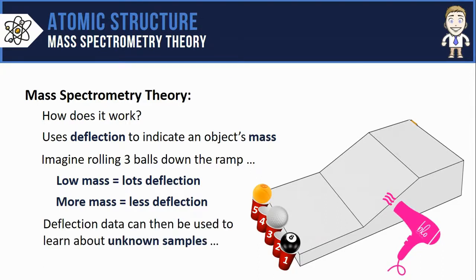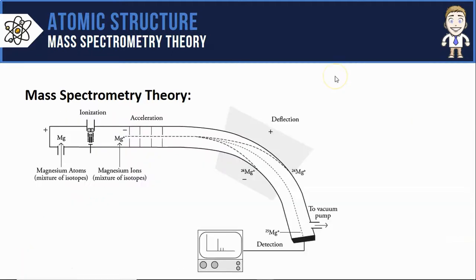And the best part about it is once you have some deflection data, you can then analyze unknown samples. Say this tie-dye ball, I have no idea how massive that ball is, but if I rolled it down the hill and it was deflected exiting in cup four, then I would know that its mass is somewhere in between that of a ping pong ball and a golf ball.